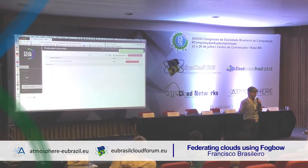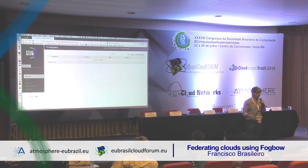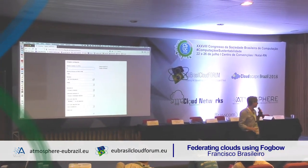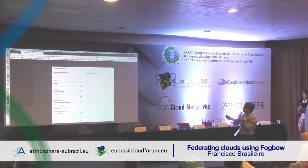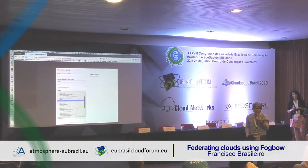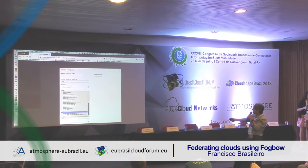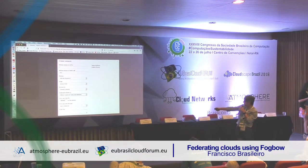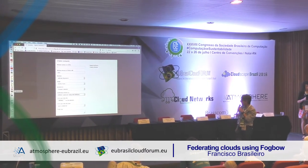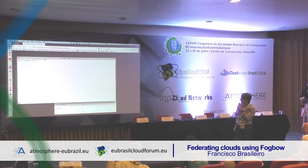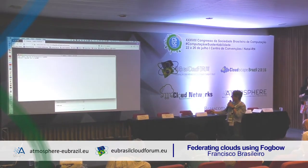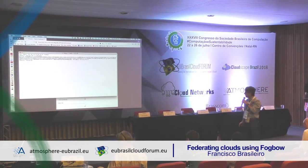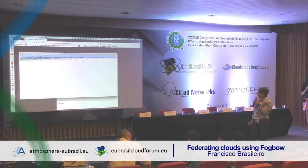Unfortunately Fogbo is not as responsive as Lemonade and I don't type nearly as fast as Gustavo, so it goes at real time. So I have created the federated network that appears there and I'm creating a VM. For that I need to provide my public key so that I can SSH to the instance afterwards.